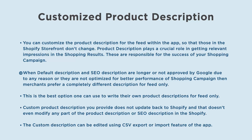When default description and SEO description are longer, not approved by Google for any reason, or not optimized for better performance of the shopping campaign, then merchants prefer a completely different description for feed only. This is the best option one can use to write their own product descriptions for feed only. The custom product description you provide does not update back to Shopify and doesn't modify any part of the product description or SEO description in Shopify.